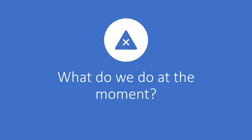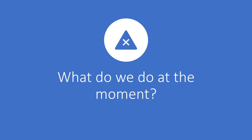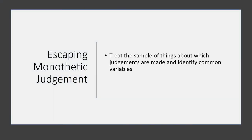What we do normally is we take the entire sample of things that we want to make comparisons about, so it may be student work, and we identify particular variables which are common across all of them. Then we use these variables to determine which are the best and which are the worst. This approach is called monothetic. It basically means that we group and order things together according to a common set of variables.